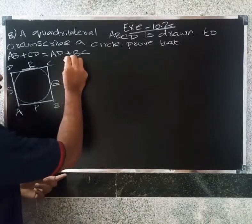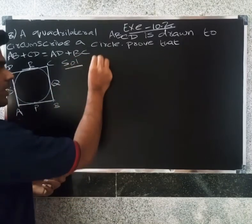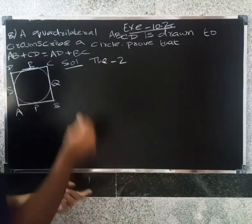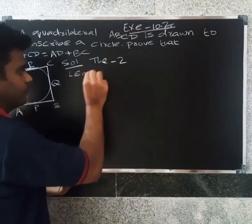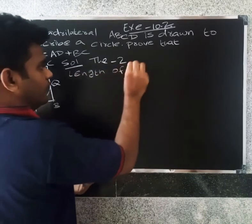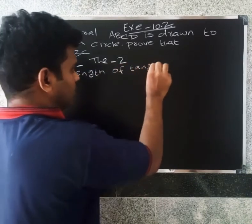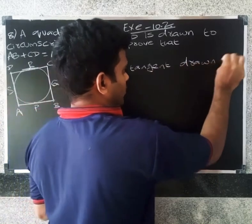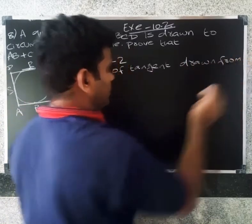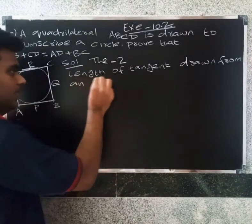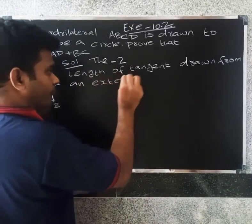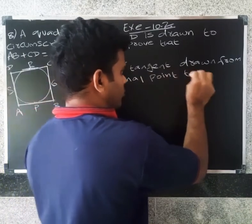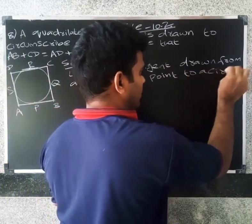So we need to use Theorem 2. Theorem 2 states: The length of tangents drawn from an external point to a circle are equal.